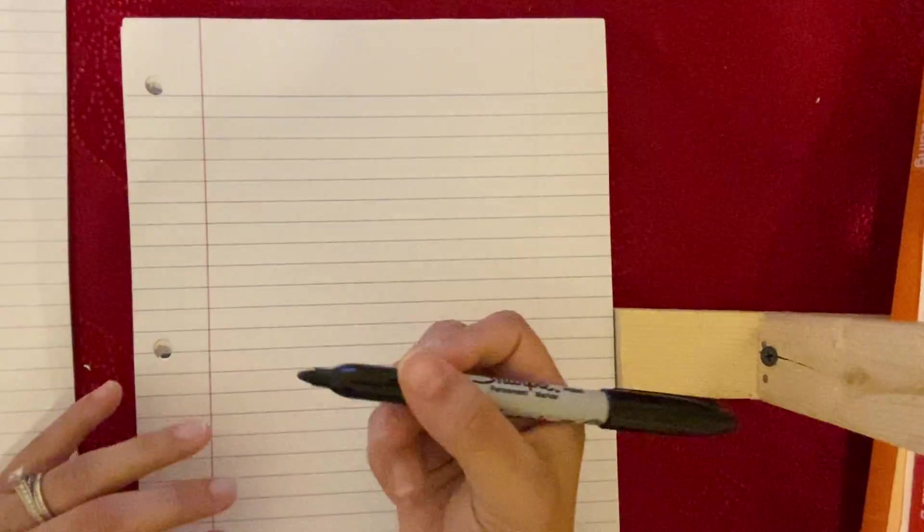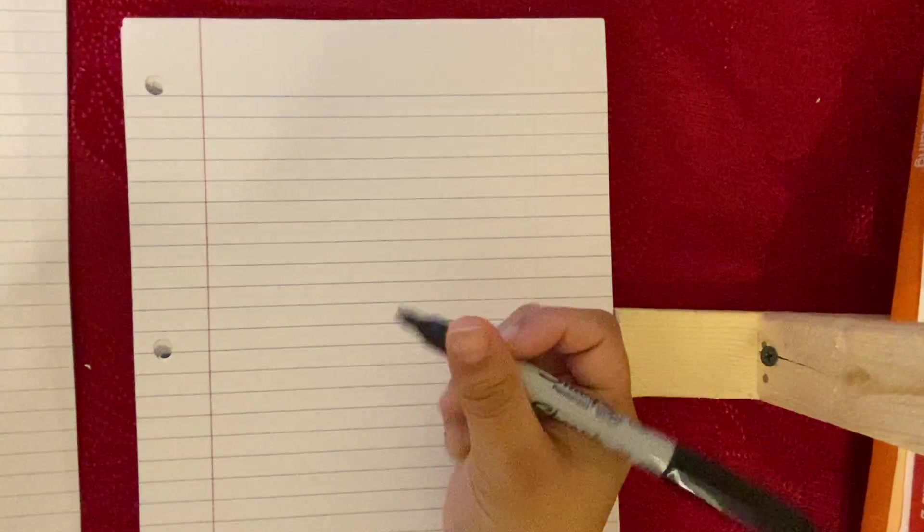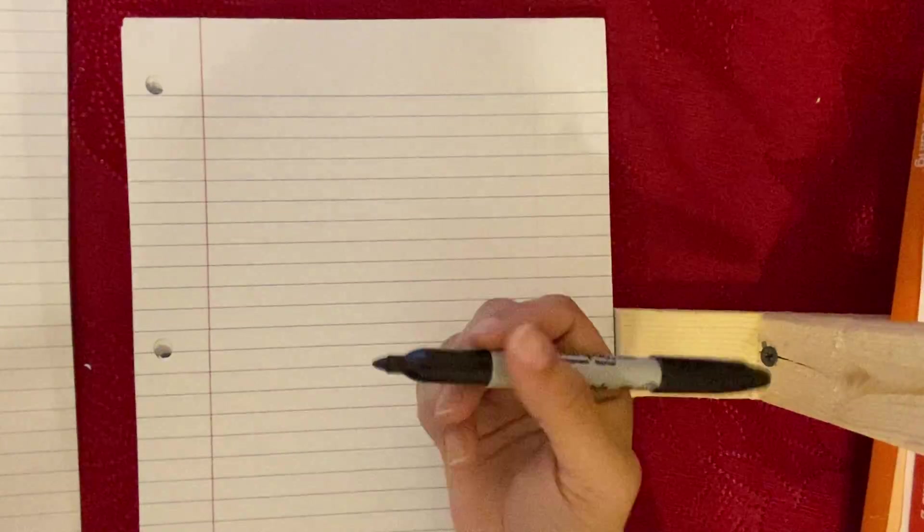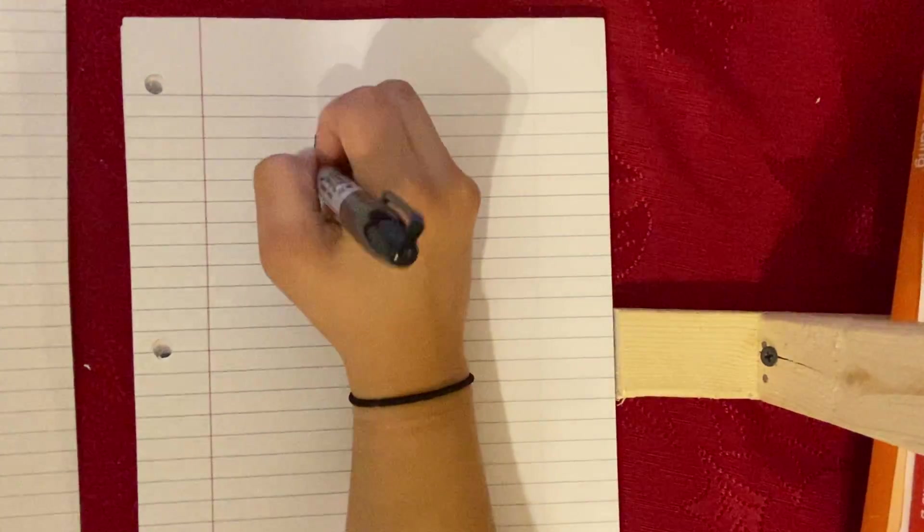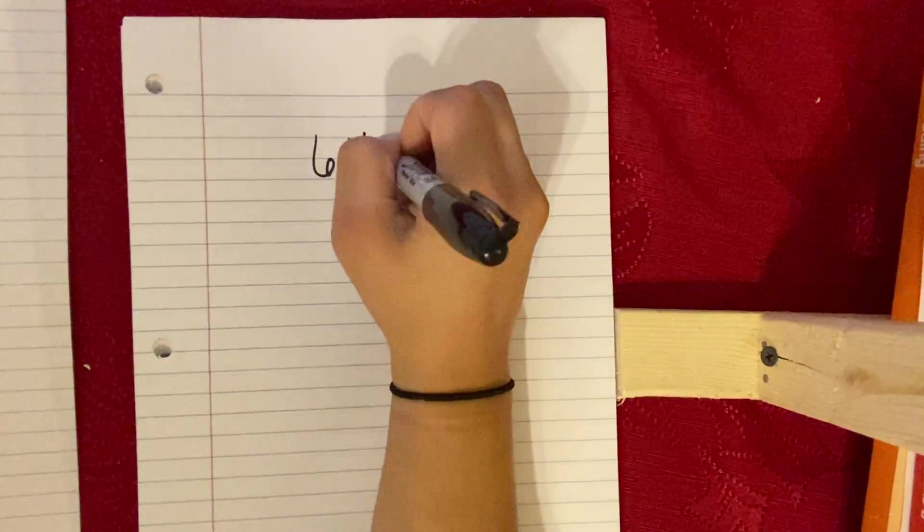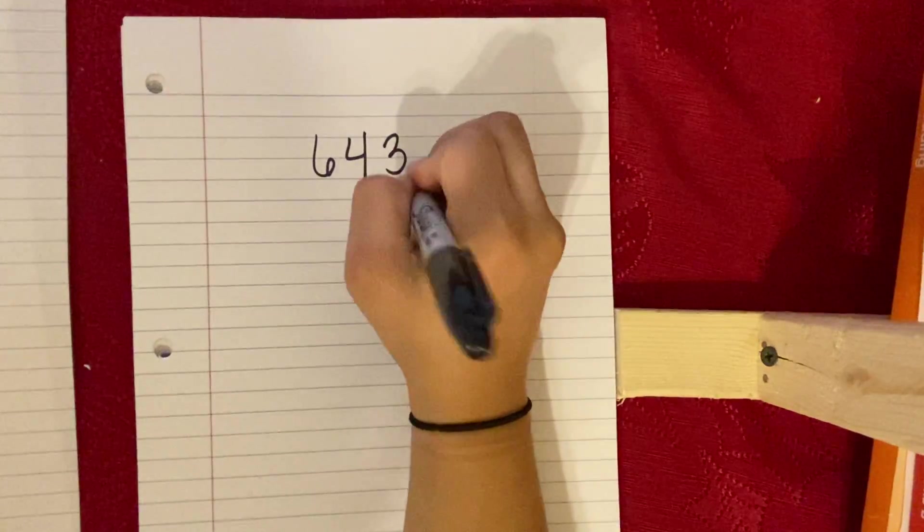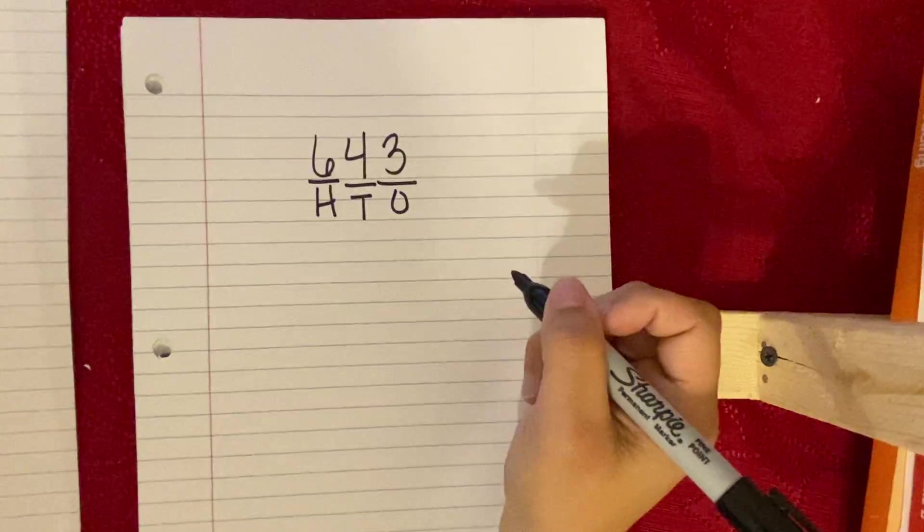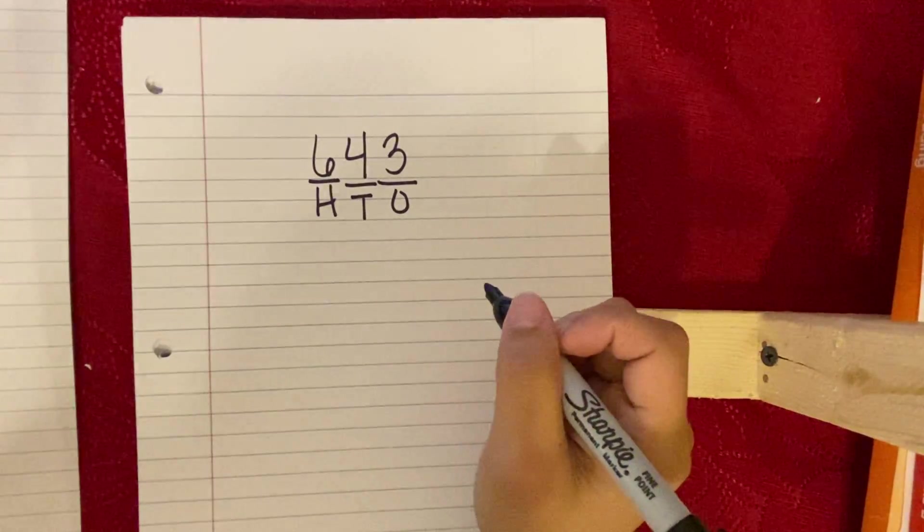So it says, create a number that is greater than 500. So you can pick any number, but it has to be greater than 500. So I'm going to pick a number. I'm going to pick 643. And I'm still going to write on the bottom my ones, tens, and hundreds place. Okay, so that's the first thing you do. Just create a number.